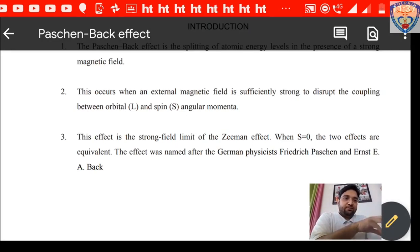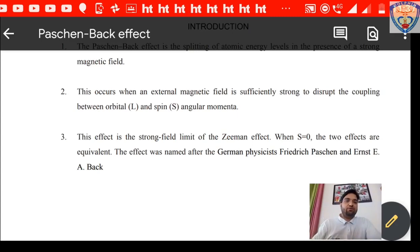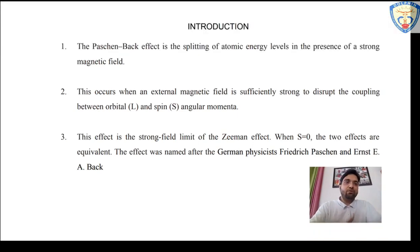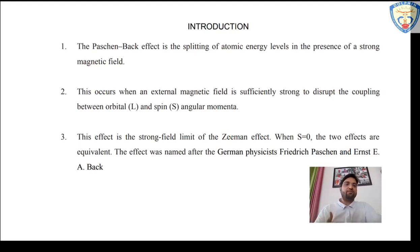In the Paschen-Back effect, the applied magnetic field disrupts the coupling between L and S, where L is the orbital angular momentum and S is the spin angular momentum. In the Zeeman effect, the strong limit occurs when S is equal to zero — when the coupling completely breaks down, the two effects are equivalent. It means when L has some value but S is zero, we can reverse back that effect into the Zeeman effect. In that sense, the Zeeman effect and Paschen-Back effect are very similar when the spin angular momentum is zero.